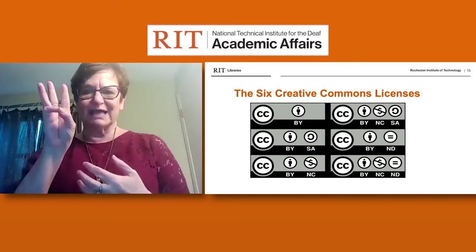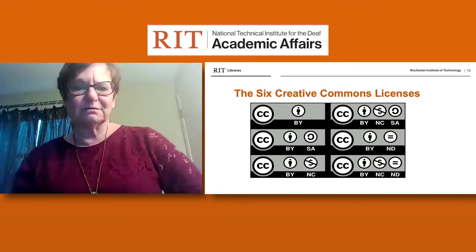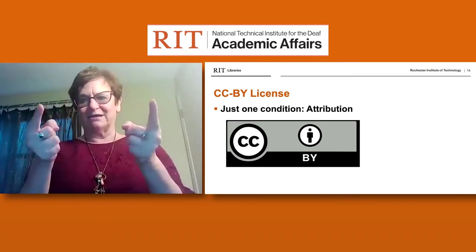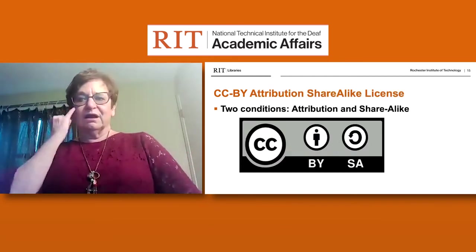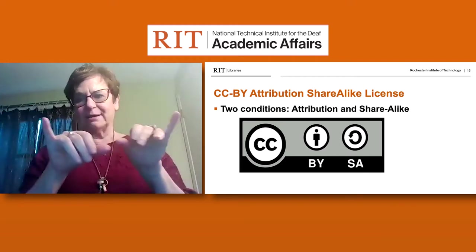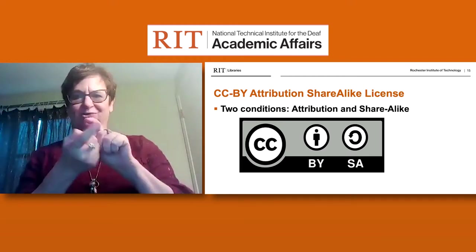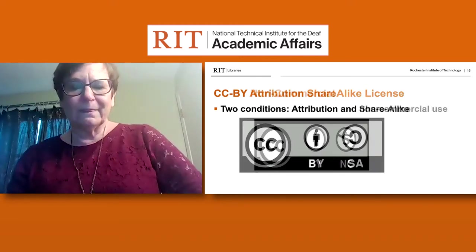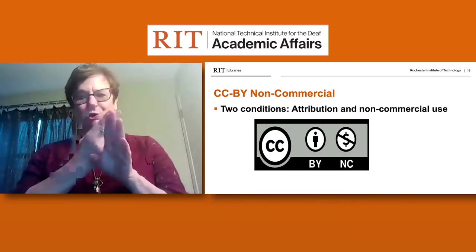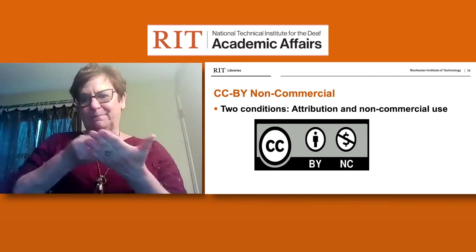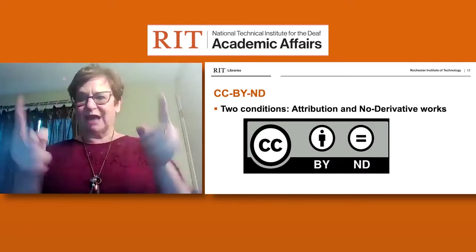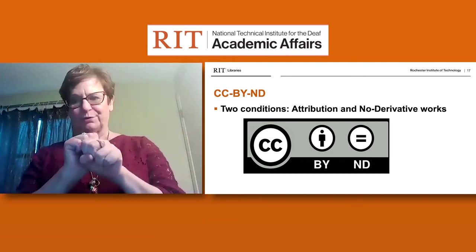Here you can see all six Creative Commons licenses listed by symbol. The CC-BY symbol alone means you only need to give citation or credit to the original creator. These symbols together mean you need to give attribution and share alike without making changes to the original work. These other symbols mean you need to give attribution and cannot use it to gain any income. And these symbols mean you must give attribution but cannot make any adaptations to the work.